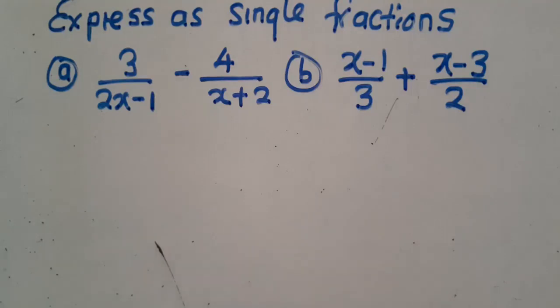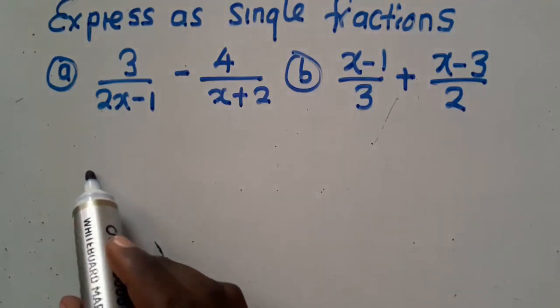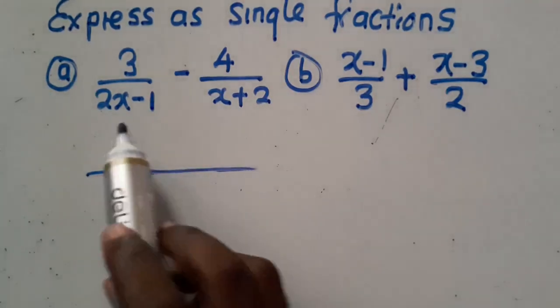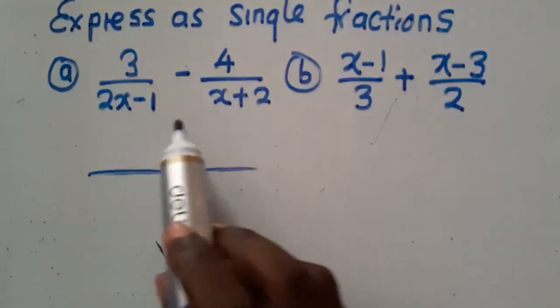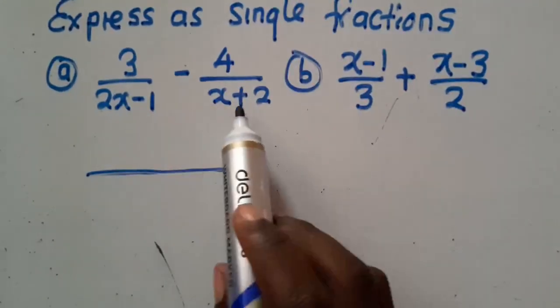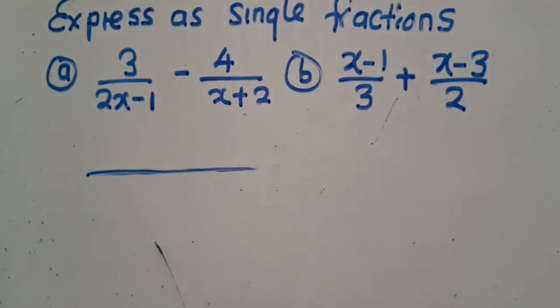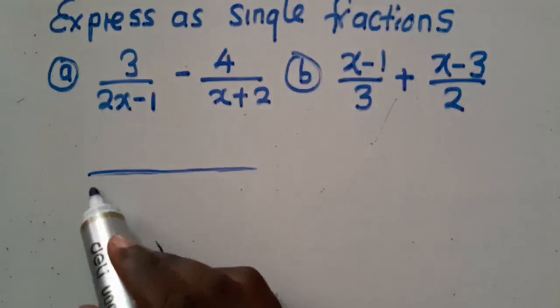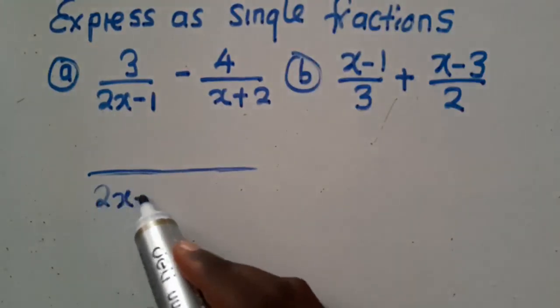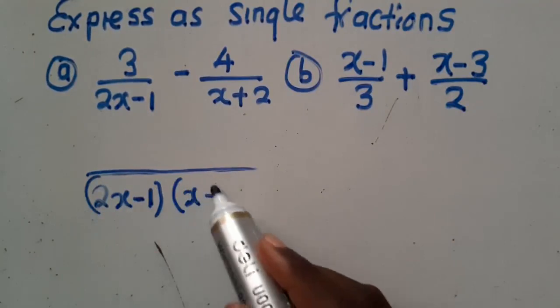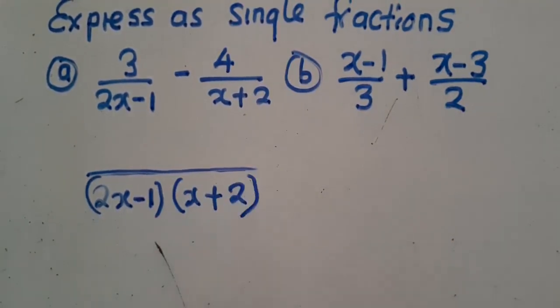The first thing you need to do is to find the denominator. How can you find the denominator of these two? The denominators are different, so you cannot find one factor. So, since they are different, you just bring them down. You say 2x minus 1, x plus 2. You do this.